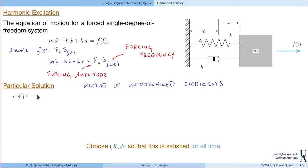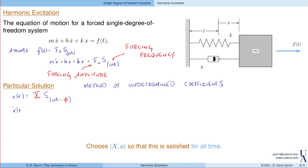Here it is. x(t) is some amplitude X, which remains to be determined, times sine(ωt − φ) — the same frequency as the forcing, minus a phase shift φ. So this amplitude X and this phase shift φ are unknown, and we need to determine them so that this solution solves the equation. The velocity is ẋ = Xω·cos(ωt − φ), and the second derivative is ẍ = −Xω²·sin(ωt − φ).